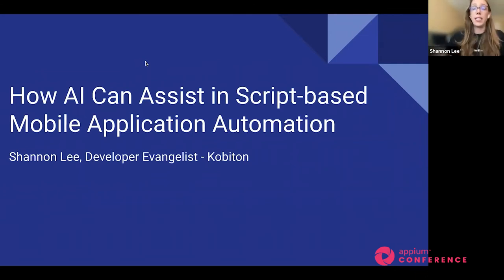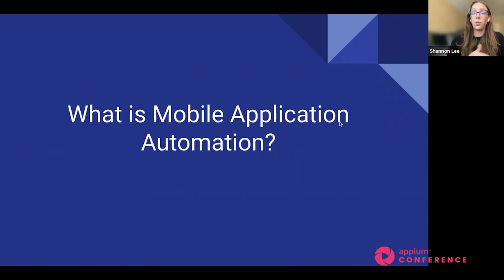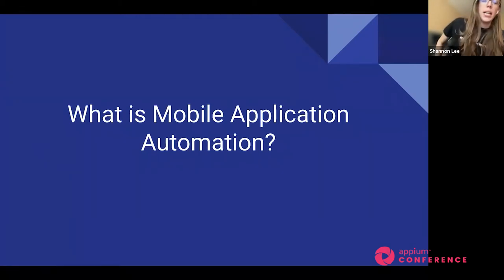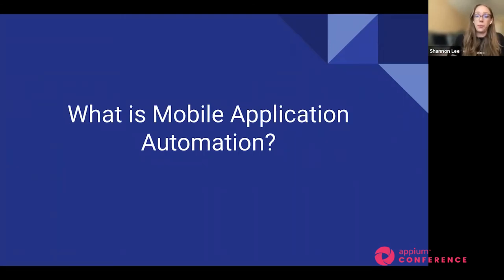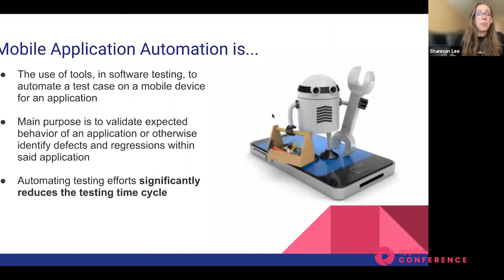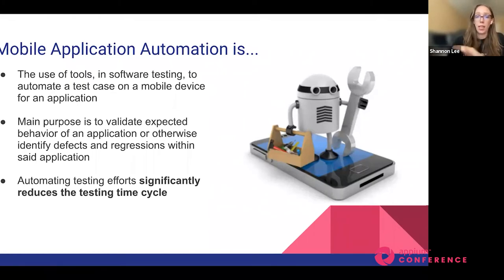Today we'll be talking about how AI can assist in script-based mobile application automation. To start, we're going to lay down the basics — some groundwork first — so we can understand the issues at play, how AI can help, and how that's important in our automation efforts. What is mobile application automation? The use of tools to automate a test case on a mobile device. The main goal is to automatically validate the expected behavior of your application.